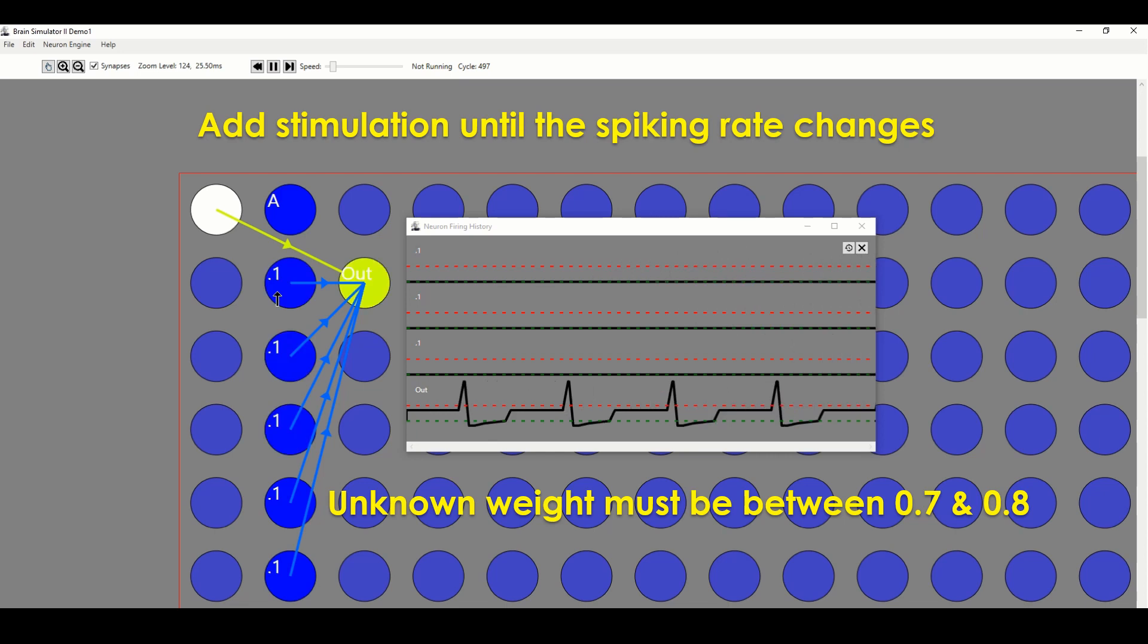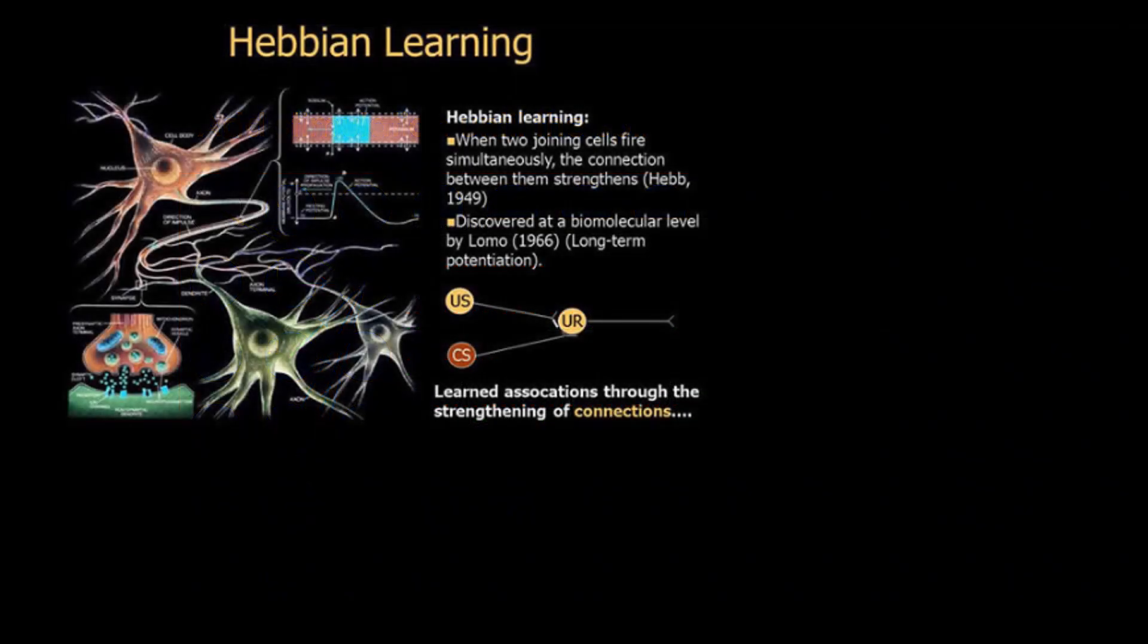Which brings us to how synapses learn their values. We've all heard that neurons which fire together wire together, which means that neurons with near simultaneous spiking increase a synapse weight while the converse is true.